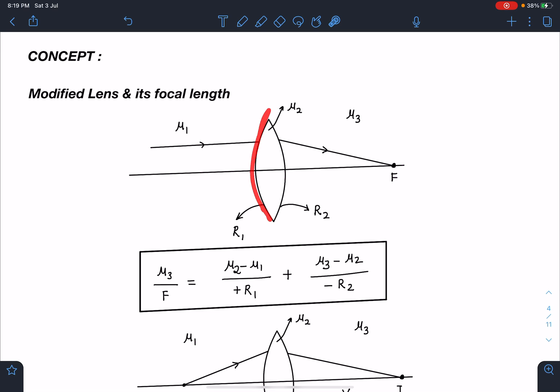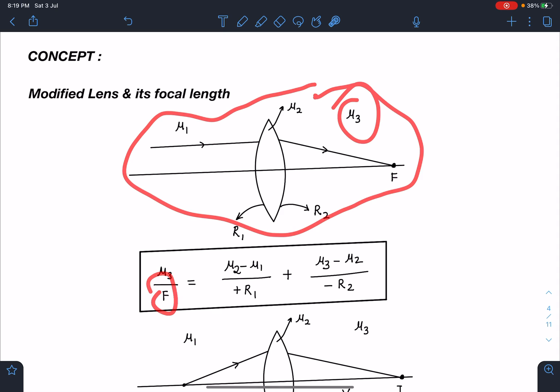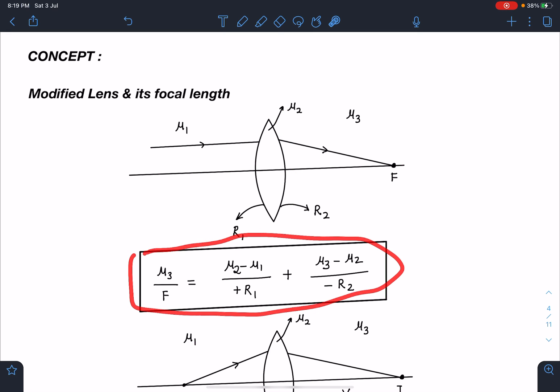Suppose there is a medium of μ₁, μ₂, and μ₃. The effective focal length of this system, I can write final medium by f equals (μ₂ - μ₁)/R₁ + (μ₃ - μ₂)/(-R₂). You can do this for any number of systems. This will reduce your calculations very quickly. I have discussed these concepts in detail in my optics course at Unacademy.